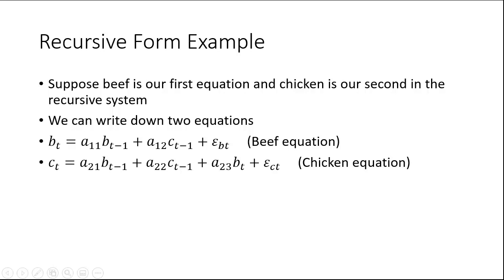Let me write down a recursive model. Suppose beef is our first equation and chicken is our second in the recursive system. Beef is a function of the past values of beef and chicken, while chicken is a function of the past values of beef and chicken and the current value of beef, and they both have an error term.